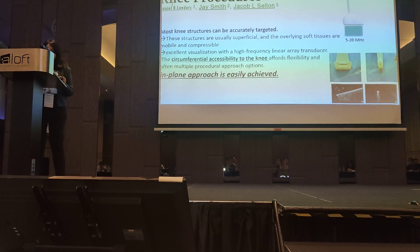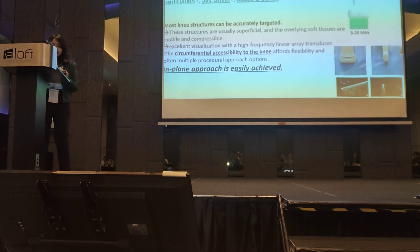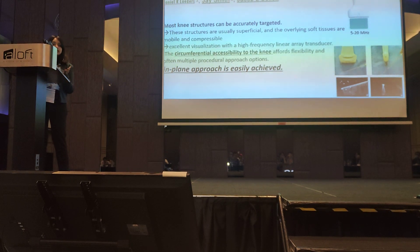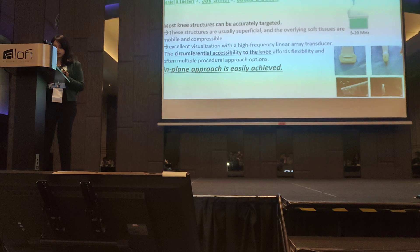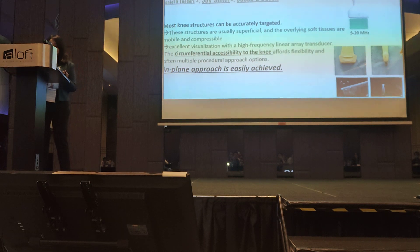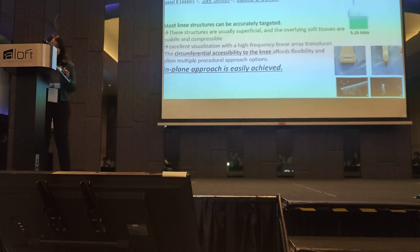Structures are usually superficial and the overlying soft tissues are mobile and compressible. Due to the structure, the circumferential accessibility of the knee is easier and we can easily visualize with a transducer. Here in this diagram, I have shown a high frequency linear probe, which ranges from 5 to 20 megahertz. In cases of knee pain procedures, we apply an in-plane technique.